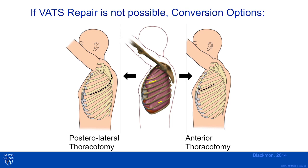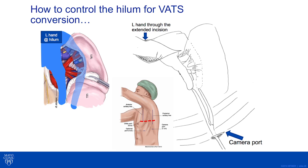If a clamp inserted through the camera port can be used to control the bleeding, then enlarging the anterior thoracotomy is likely best, as was done in this case. By placing the hand through the enlarged anterior utility port — which became an anterior thoracotomy — I was easily able to insert my hand between the ribs, encircle the hilum of the lung, and stop the bleeding. By grasping the hilum with palpation alone and clamping down, no more blood loss occurred.